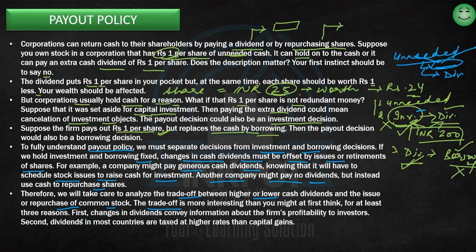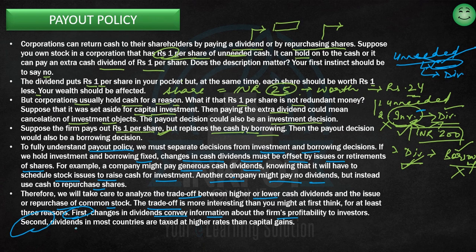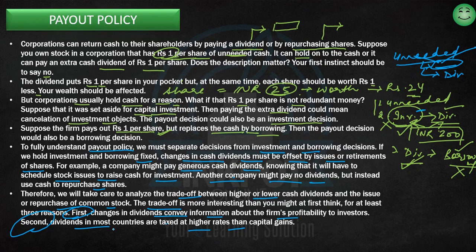First, changes in dividends convey information about the firm's profitability. If a company was releasing dividends and stops, investors may feel the company's value has changed. When you declare dividends, it says a lot to current and future investors. Second, dividends are taxed at a higher rate than capital gains. In most countries capital gains tax is low or zero, so companies must consider the net return going to the investor — they might buy back shares so the investor can book a capital gain instead.